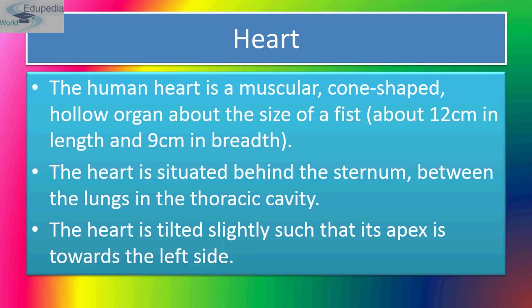The heart is enclosed in a membranous sac called the pericardium, formed of the following layers: first is fibrous pericardium, and second is serous pericardium. The fibrous pericardium is a tough inelastic sac around the heart made up of white fibrous connective tissue. The serous pericardium is inner to the fibrous pericardium and is formed of two thin layers: the outer layer called parietal pericardium, and the inner layer called visceral pericardium.